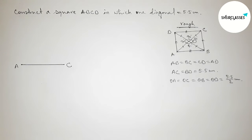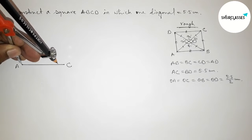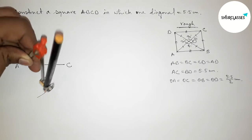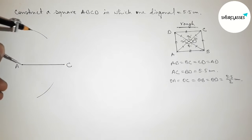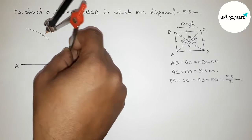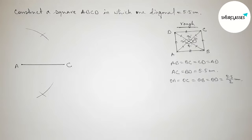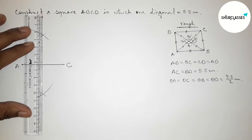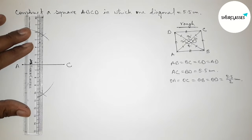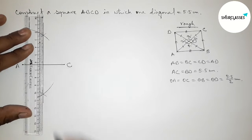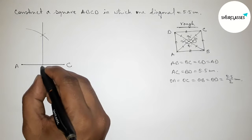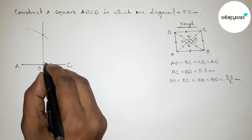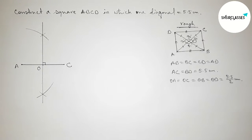First we have to bisect the line AC. Putting the compass on point A and taking a radius greater than half of AC, drawing arcs above and below. Then putting the compass on point C with the same length and drawing arcs to intersect. Joining the two intersection points gives the perpendicular bisector, and both lines intersect at point O at 90 degrees.